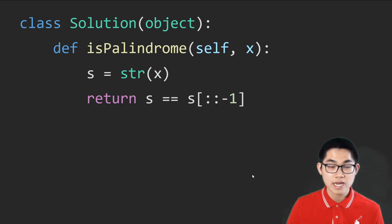This is the solution that uses strings. It just converts the number x into a string and returns true or false if s is equal to its reversed version.